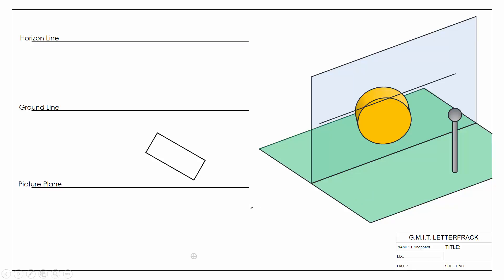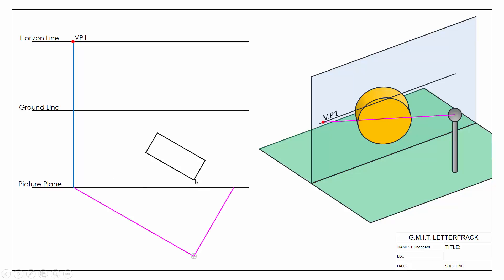From our previous videos, there's a certain procedure we need to follow. The first thing we generally do is solve the vanishing points of our object. We do that by looking parallel to whatever direction we need to move in — going parallel up onto the horizon line to give us our vanishing point. Here we have direction 2 giving us VP2, and our spectator looks parallel to it to give us our second vanishing point.